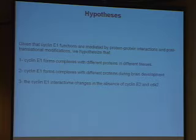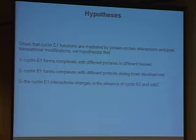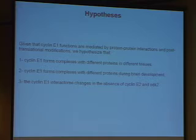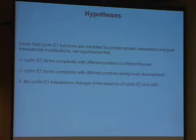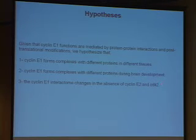Here's the hypothesis. Given that Cyclin-E1 functions are mediated by protein-protein interactions and post-translational modifications, we hypothesize that Cyclin-E forms complexes with different proteins in different tissues, with different proteins during brain development, and that the Cyclin-E1 interactome — defined as the set of proteins that interact with Cyclin-E — changes in the absence of Cyclin-E2 and in the absence of CDK2.